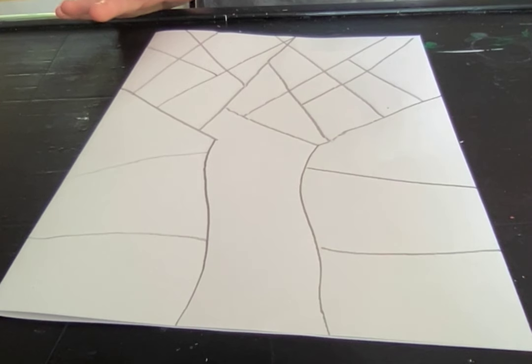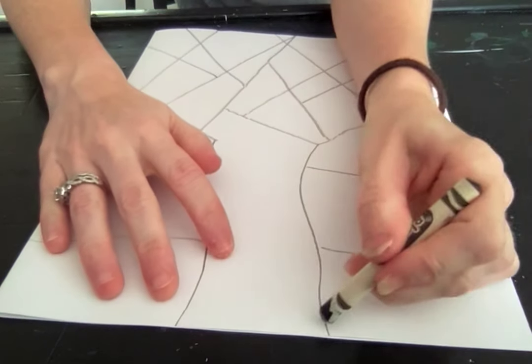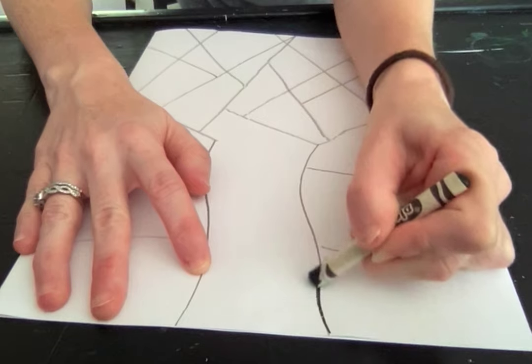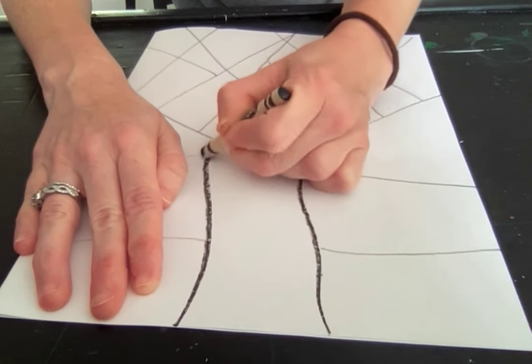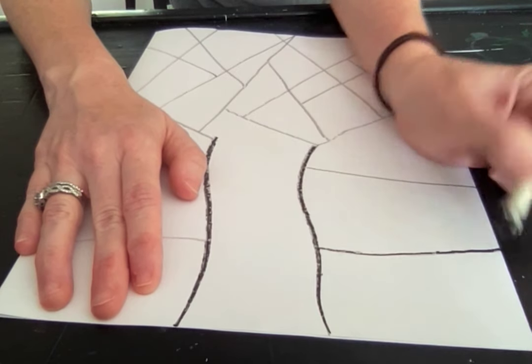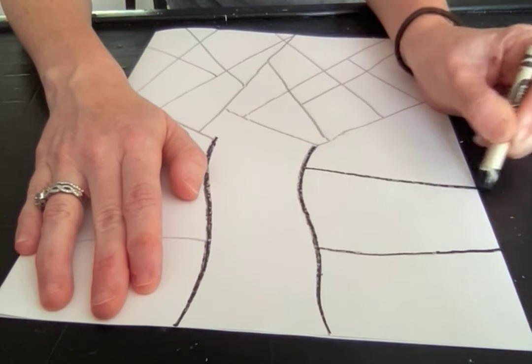You guys are gonna trace with the black sharpie marker. I'm gonna be tracing with a black crayon because I forgot my sharpie marker in the other room. So you're gonna take your black and you're just gonna trace it nice and neat over all your lines, and I'm gonna tell you to go back and make your lines that you trace a little bit thicker.